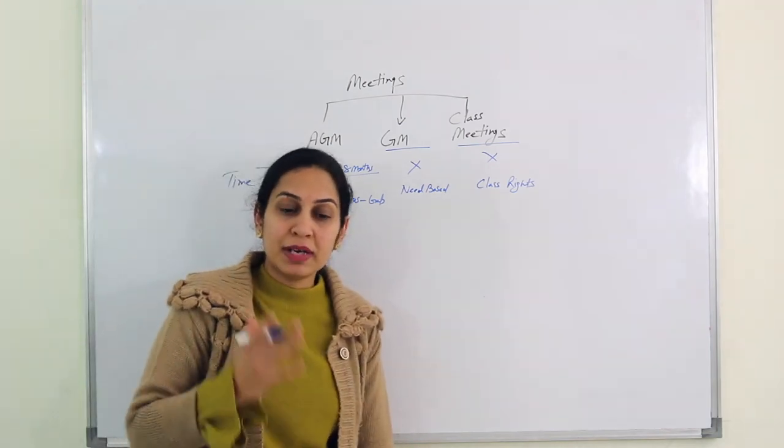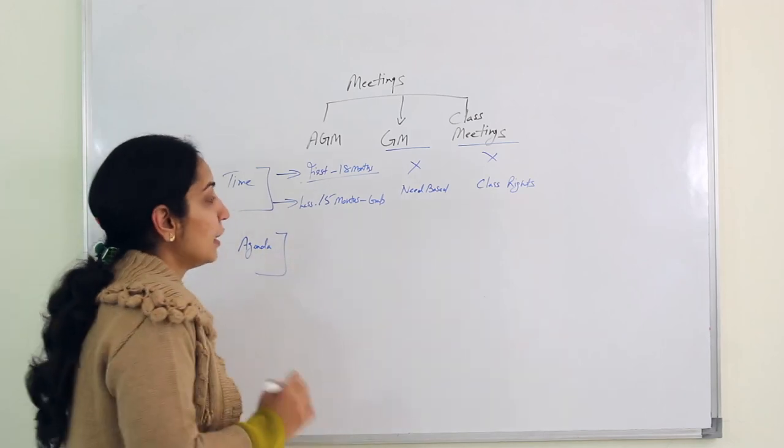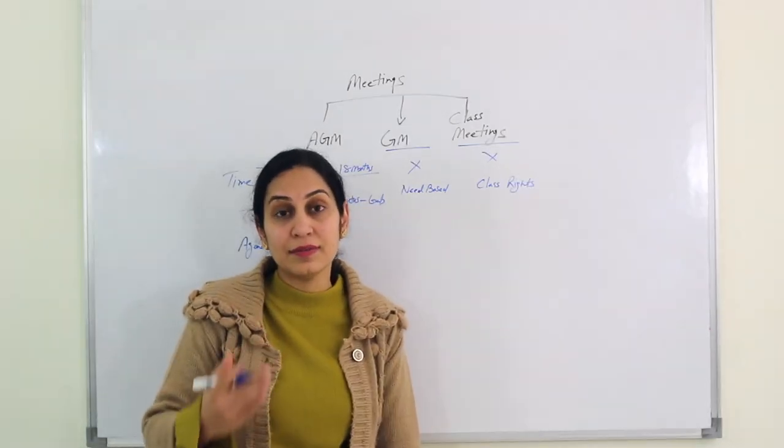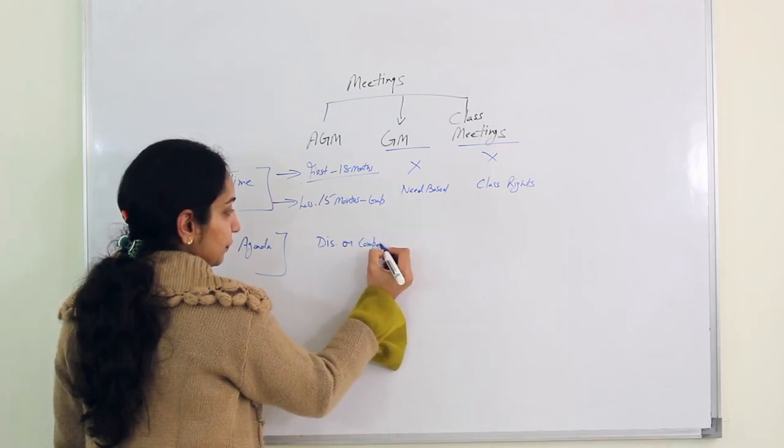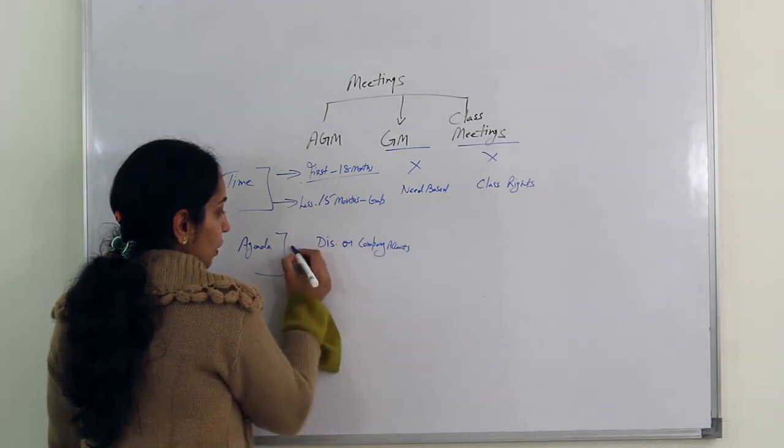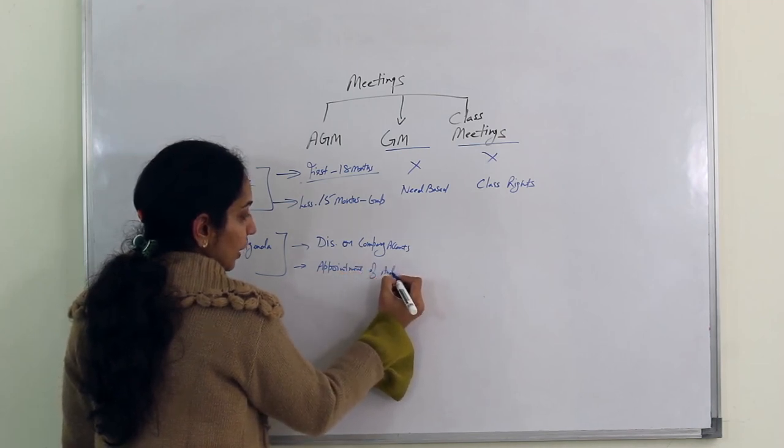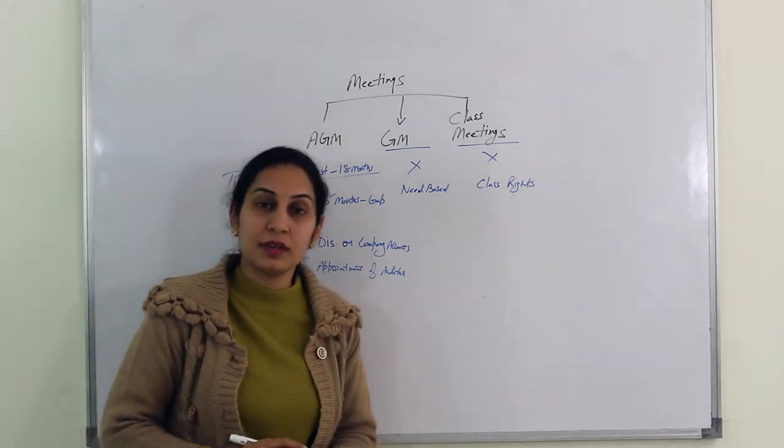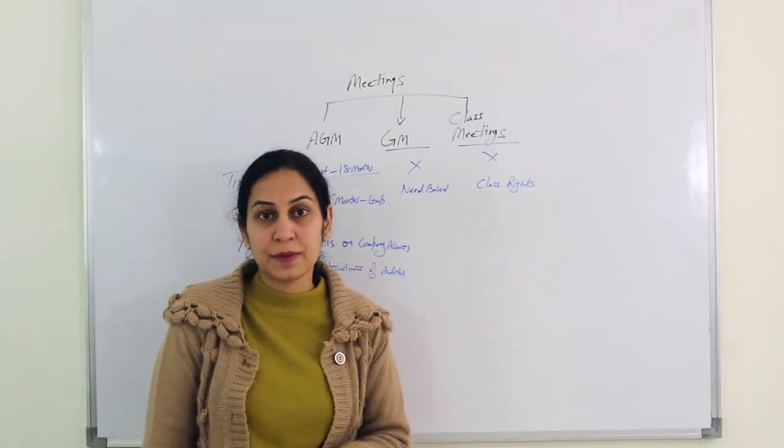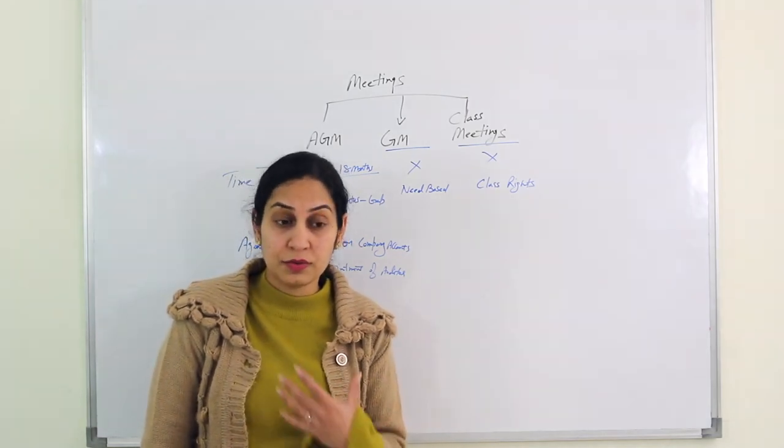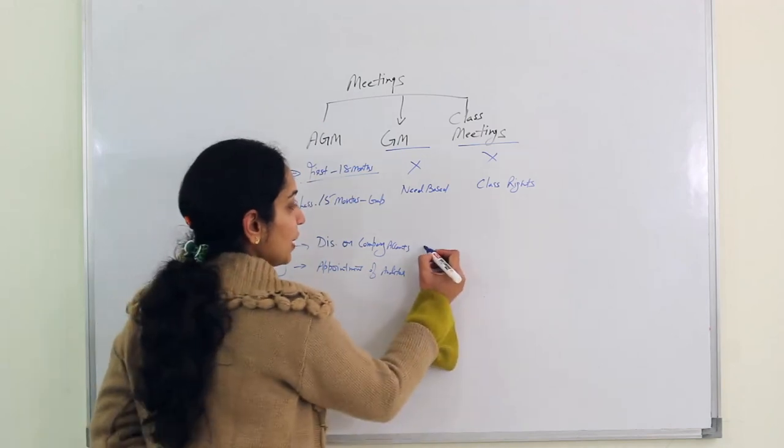So what will be the agenda of the meeting? Let's talk about agenda now. In AGM all regular events will occur. For example discussion on company accounts, appointment of auditor, or any other regular business which director wants to discuss with the shareholders. That's an agenda of AGM. So regular appointment and reappointment of auditor happens in AGM. Any kind of discussion happens on the company account which needs to be discussed with the shareholders under AGM, it happens in AGM. If we talk about GM's agenda, as we discussed it has to be specific agenda.